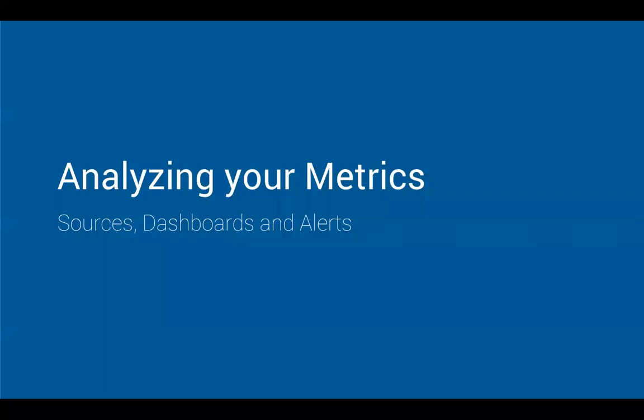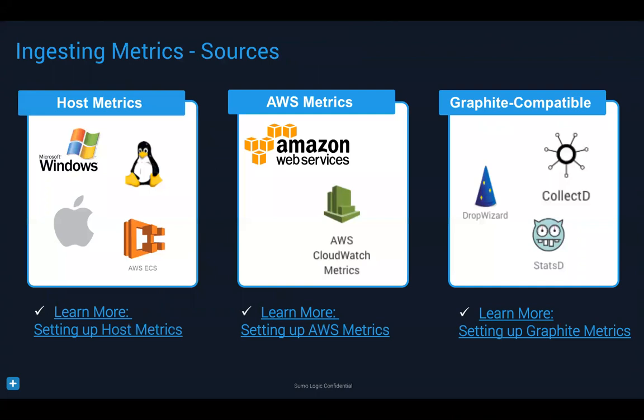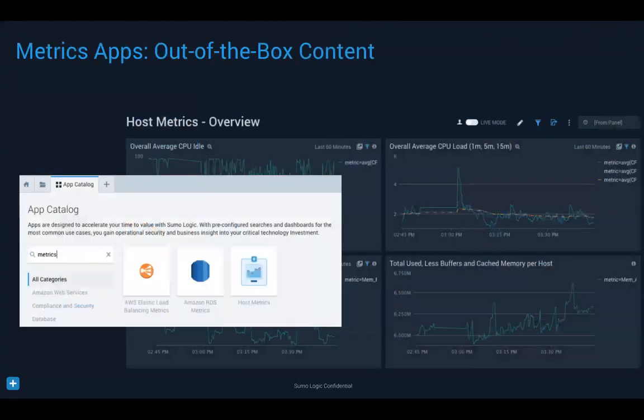I've been talking a lot about logs — let's talk a little about metrics. You can bring host metrics from your servers. If you already have an installed collector taking logs from a host, it's pretty easy to turn on metrics collection for that host as well. We can take AWS metrics from CloudWatch, and we can grab graphite-compatible metrics — Dropwizard, collectd — all onto Sumo Logic.